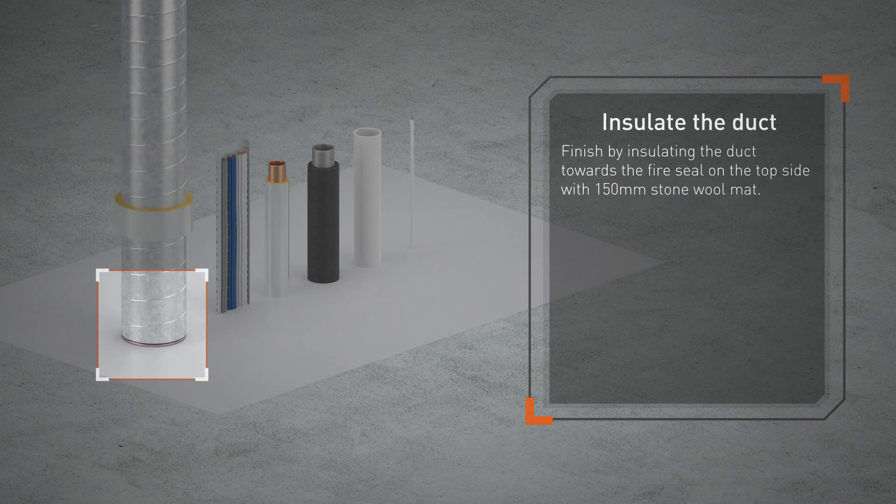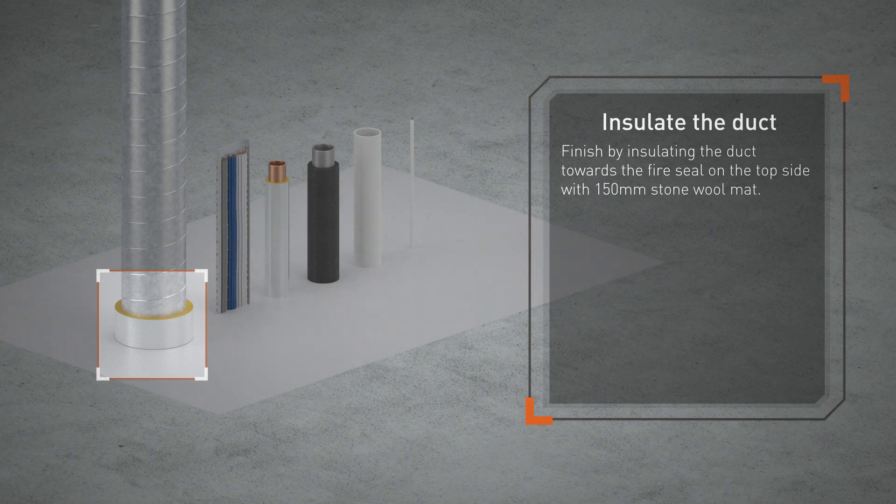Finish by insulating the duct towards the fire seal on the top side with 150 mm stone wool mat.